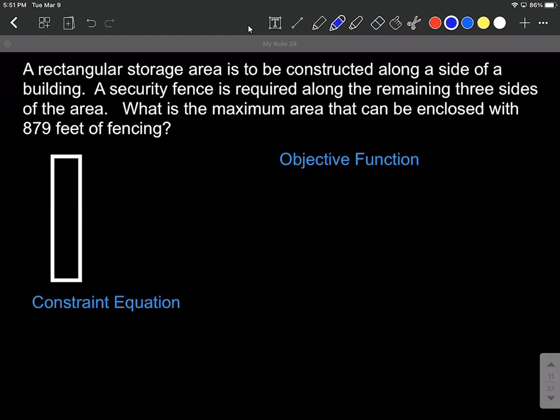All right, let's work an optimization problem. We're going to be building a fence. A rectangular storage area is to be constructed along a side of a building. A security fence is required along the remaining three sides of the area. What is the maximum area that can be enclosed with 879 feet of fencing?